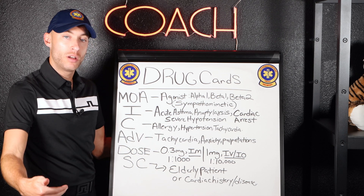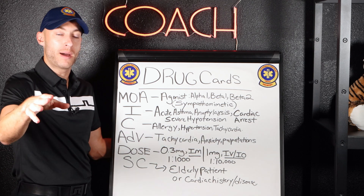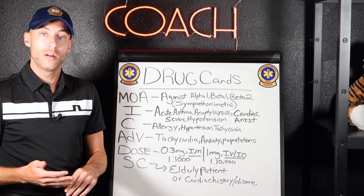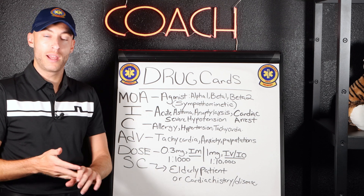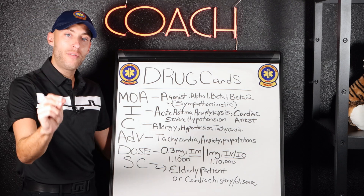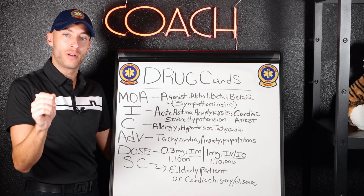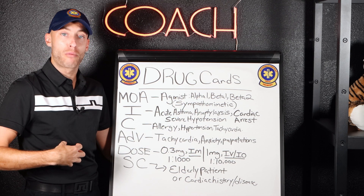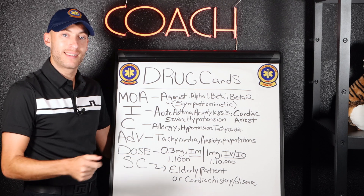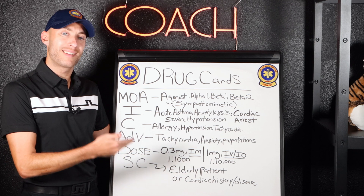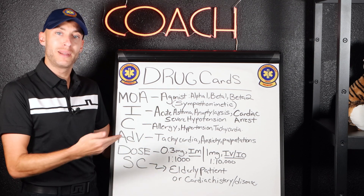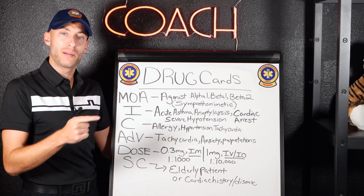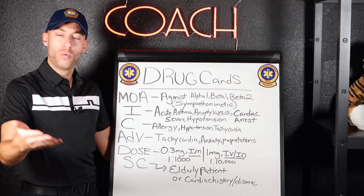If we activate our sympathetic nervous system and this drug mimics that, what do we get? Dilated pupils, increased blood pressure, increased heart rate, and bronchodilation. If this drug opens up the lung fields, wouldn't it make sense to give it in asthma or anaphylaxis where we have bronchoconstriction? And because we know this drug is an alpha-1 vasoconstrictor, wouldn't it make sense to give it in cardiac arrest or in severe hypotension states?